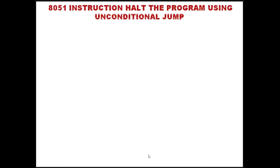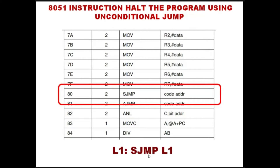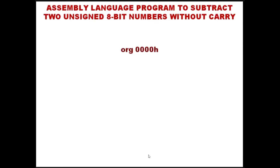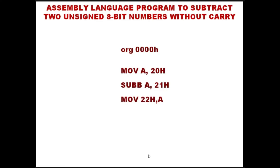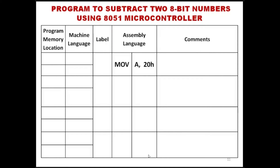Then we hold the program using the short jump instruction. To write the code for subtracting two 8-bit numbers without carry, we write ORG 0000H — ORG is an assembler directive meaning the program is written into program memory starting at address 0000H. The first instruction is MOV A, 20H, the second instruction is SUBB A, 21H, and after subtraction the difference of locations 20 and 21 is transferred to data memory location 22.